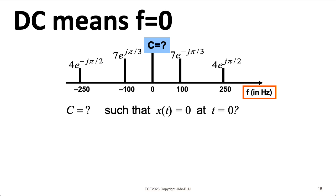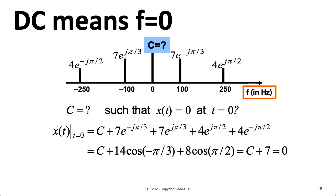So here's an exam question. Suppose we have the same example we just saw, except for instead of having a DC component of 10, we'll call the DC component capital C. What C would make our function be zero at time equals zero? So to get that, we can just plug t equals zero into the function. And if we compute that out, we wind up with c plus seven equals zero. So c is equal to minus seven.